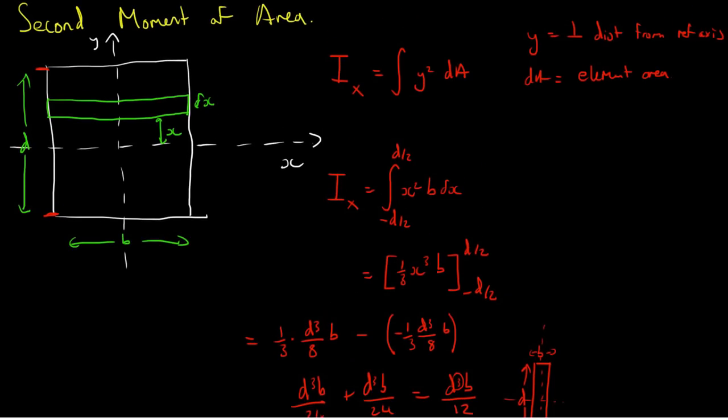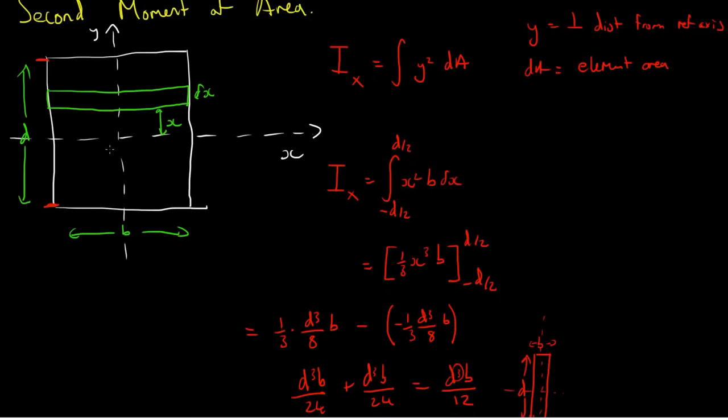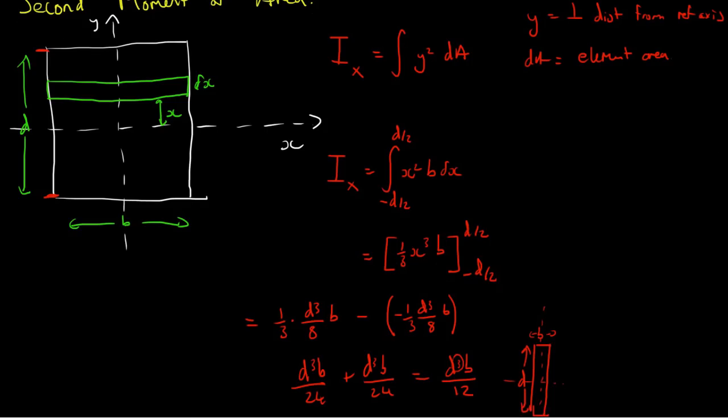Okay, so that was for a rectangle through the centre. We can do a very similar thing for the rectangle about one end, but I'm going to leave you to do that. The only difference would be that the limits, instead of being from d over 2 and minus d over 2, would be from 0 up to d, because we've effectively shifted this whole thing upwards by d over 2. I'm going to instead choose something that's a little bit more tricky.